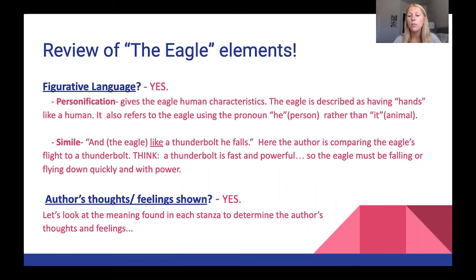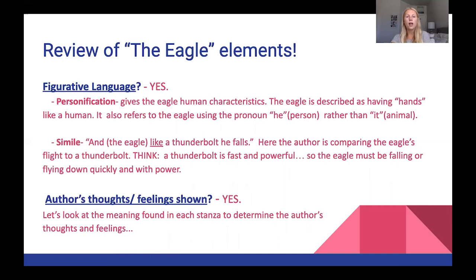A simile was also used: 'like a thunderbolt he falls.' The word 'like' is underlined — that gives us a clue right away this is a simile. The author is comparing the eagle's flight to a thunderbolt. A thunderbolt is fast and powerful, so the eagle must be falling or flying down quickly with power. For author's thoughts and feelings — yes, they were shown throughout the poem.